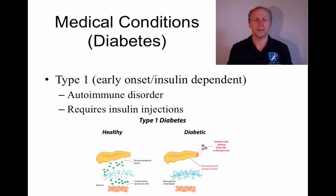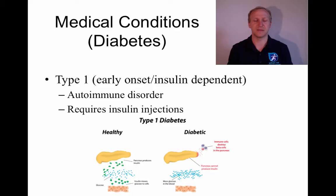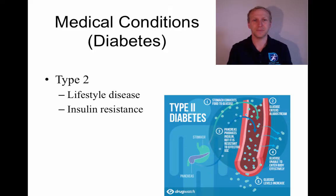The next medical condition is diabetes. There are two types. Type 1, also known as early onset or insulin-dependent diabetes, is an autoimmune disorder where the pancreas no longer produces insulin properly, requiring insulin injections. It's very important for Type 1 diabetics that the timing of their insulin injections is not directly before or after exercise, because exercise itself opens up the muscle cells and essentially does what insulin does.